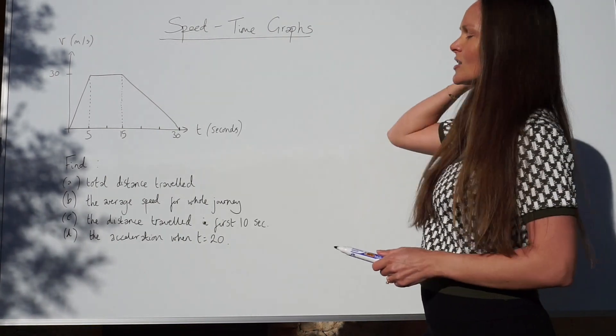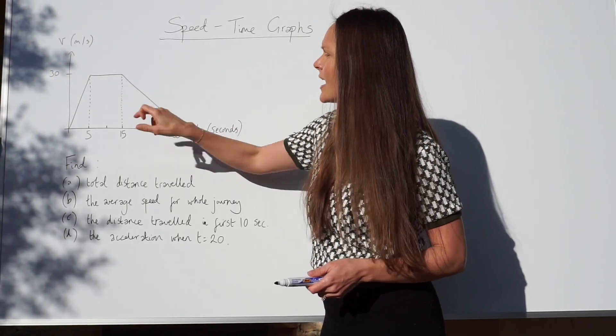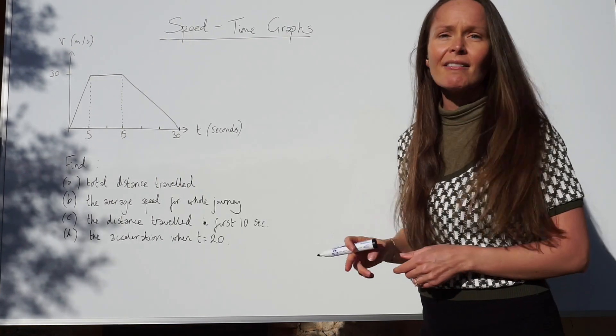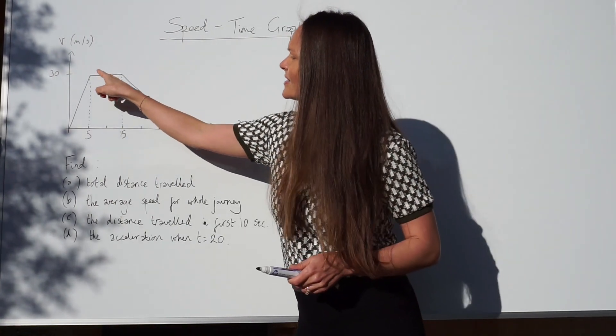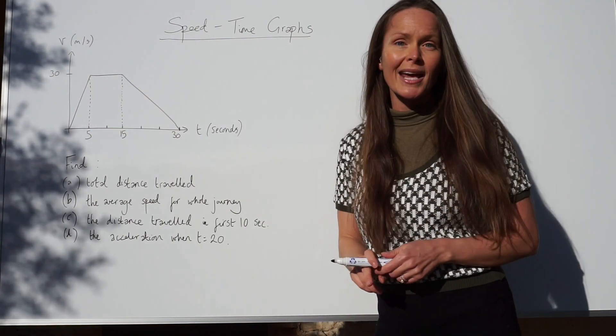There's more than one way of doing this question. You could split this shape up into shapes that you recognise, like a triangle, a rectangle and a triangle. However, you can do it in one whole go. You can find the area of a trapezium because this quadrilateral shape with one set of parallel sides is called a trapezium.